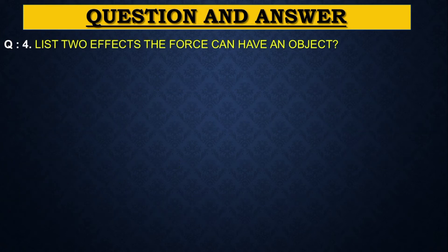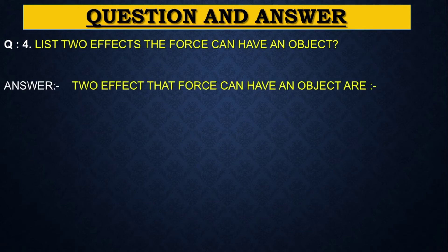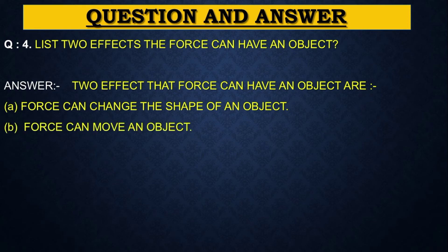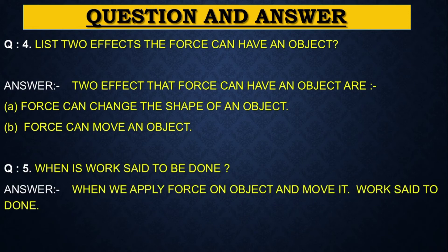Next question. List two effects that force can have on an object. Answer is two effects that force can have on an object are first, force can change the shape of an object, second, force can move an object. Next question. When is work said to be done? Answer is when we apply force on an object and move it, work said to be done.